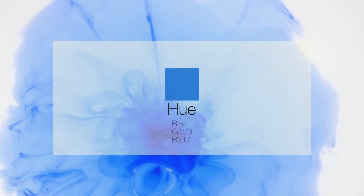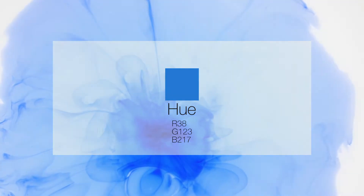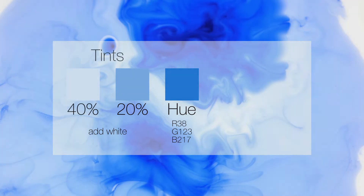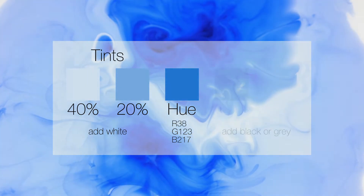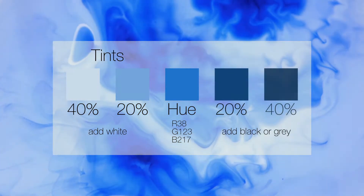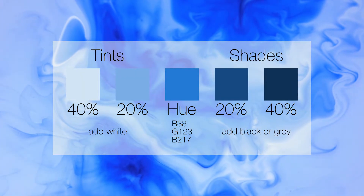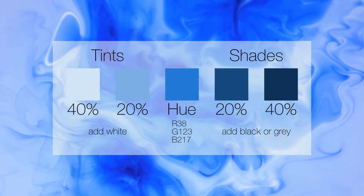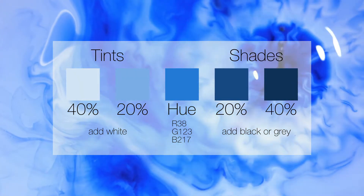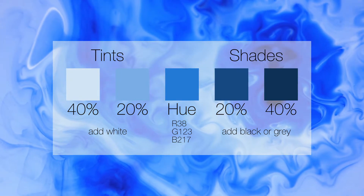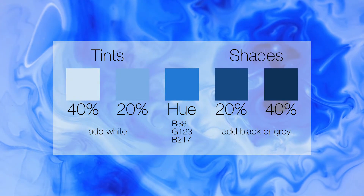Colours can have a base hue — the default of that colour. Adding white to that colour creates a tint. Adding black or grey to that colour creates a shade. Using tints or shades of a hue is a good graphic design trick — it creates the design principle of unity and is a lot more harmonious.